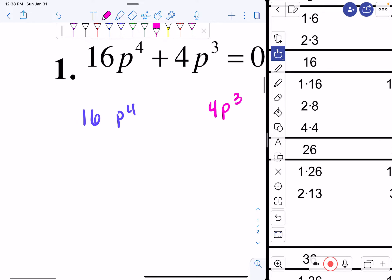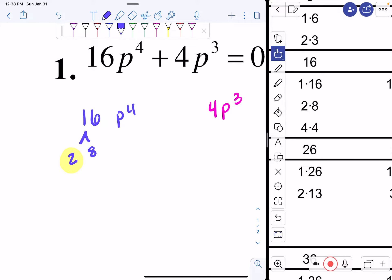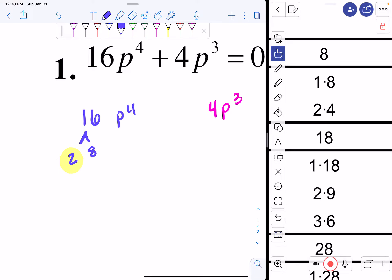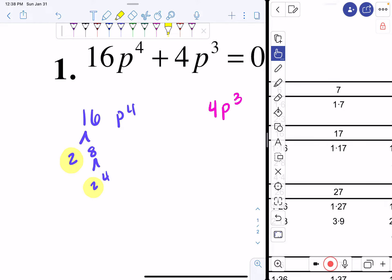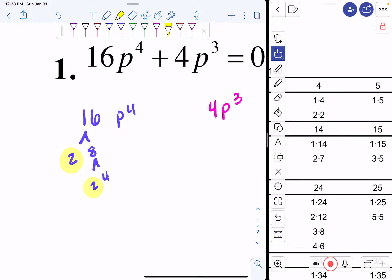When I break apart a 16 I can break it apart into 1 and 16, 2 and 8, or 4 and 4. I'm going to do 2 and 8, highlight my 2 because that's prime. I can break apart an 8 to be 2 and 4, highlight my 2 again, and then I can break apart a 4 to be 2 and 2.